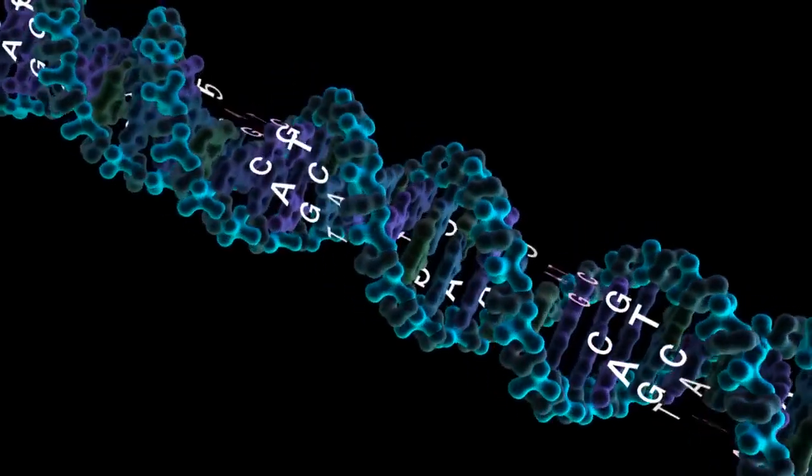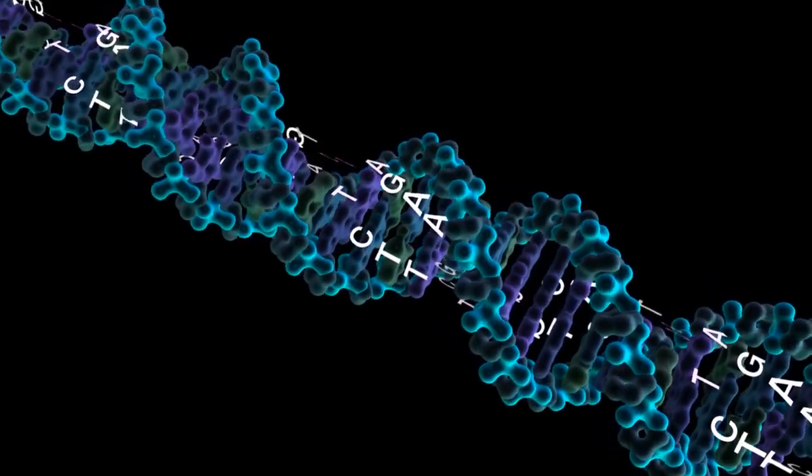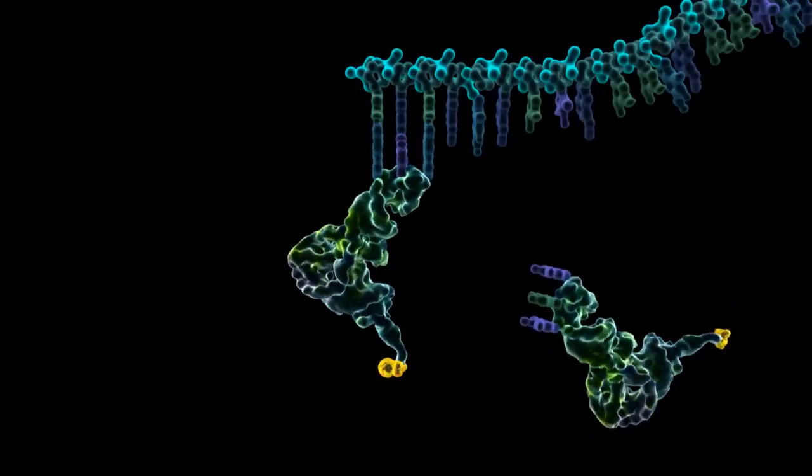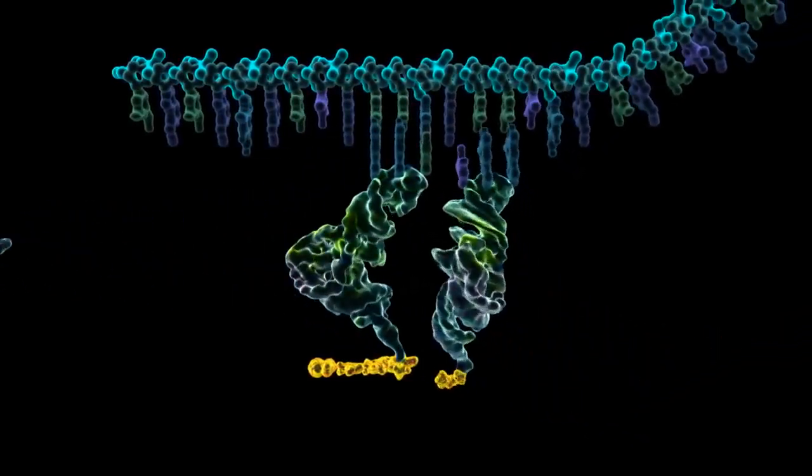Strings of precisely sequenced chemicals called nucleotide bases supply the assembly instructions, the information for building the crucial protein molecules that living cells need to survive.